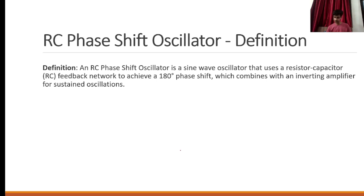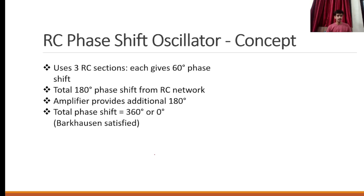This is the RC phase shift oscillator — the concept. It uses three RC sections. Each section gives a 60 degree phase shift, giving a total of 180 degree phase shift from the RC network. The amplifier provides an additional 180 degree phase shift, so the total phase shift is 360 degrees, or equivalently 0 degrees.